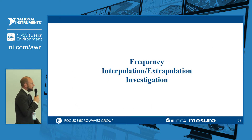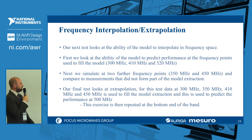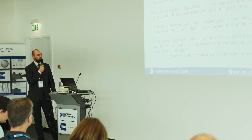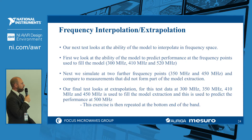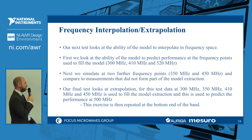Now let's move to frequency interpolation and extrapolation. First we verify performance at the frequency points used to fill the model: 300, 410, and 520 MHz. Then we simulate interpolated frequency points at 350 and 450 MHz and compare to measured results. For extrapolation, the model is built from 300, 350, 410, and 450 MHz data, and we simulate at 520 MHz, then also repeat the test at the low end of the band.